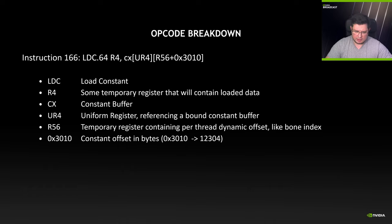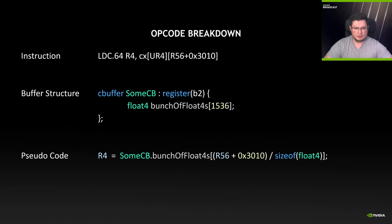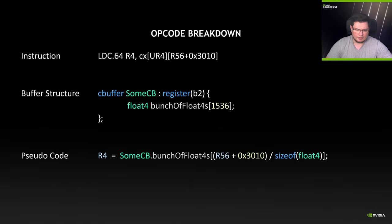Finally, there is a constant buffer offset in bytes: 12304. This is a very big indicator or clue to identify a specific resource structure — it must be a constant buffer structure which is at least 12304 bytes large. Looking at this load constant instruction differently, there is a constant buffer with a lot of float4s, and register R56 tries to access one of those float4s. This information is available in DirectX assembly.